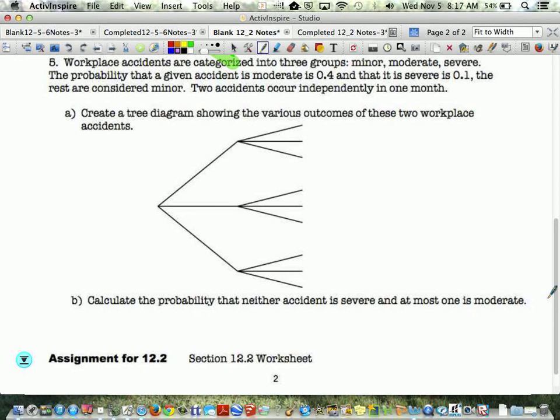Workplace accidents are categorized into three groups: minor accidents, moderate accidents, and severe accidents. The probability that a given accident is moderate is 0.4, and that it is severe is 0.1. The rest are considered minor. Two accidents occur independently in one month. Create a tree diagram showing various outcomes of these workplace accidents. So let's always put minor on top, moderate in the middle, and severe on the bottom. Whenever you make your tree diagrams, your branches should always be the same every time you split. They tell us that the accident is moderate is 0.4.